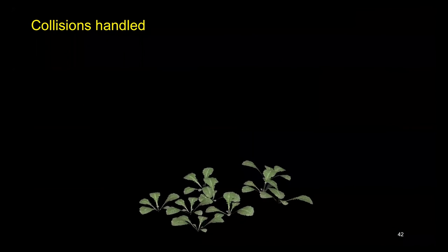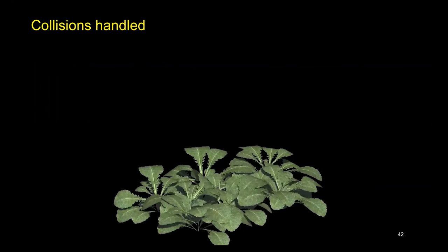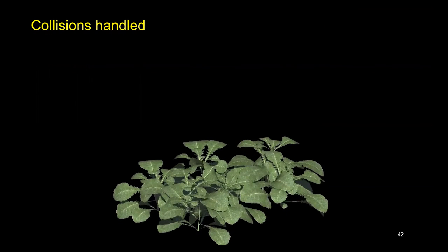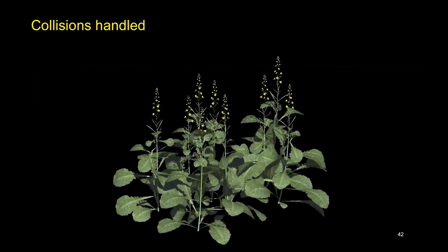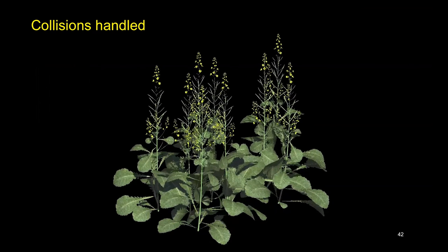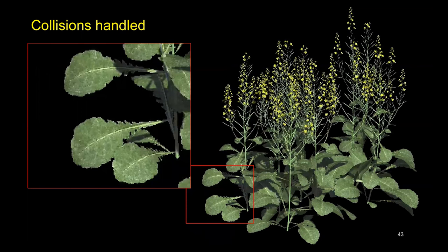For this reason, we combine position-based dynamics and L-systems to simulate collision detection and resolution algorithmically. This is important from a visual perspective so that plant organs don't intersect. Zooming in again shows that the leaves no longer intersect.